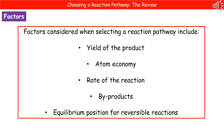The first factor is the yield of the product. They want a high yield in order to get the maximum amount of their product from their raw materials. They would also like a high atom economy, so that means there's less wastage. And they want a fast rate of reaction so they can produce a greater amount of product in a shorter space of time.